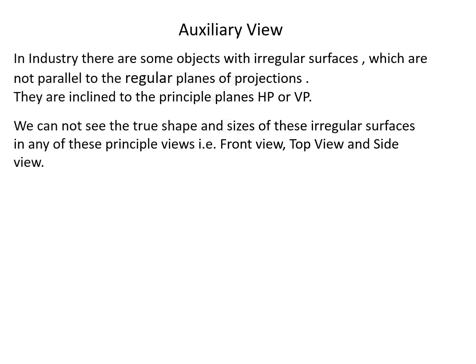Let us see what is meant by an auxiliary view. In industry, there are some objects which are of irregular surfaces — that is, which are not parallel to the regular planes of projection. It means that they are inclined to the principal planes, that is HP or VP. We cannot see the true shape and size of these irregular surfaces in any of the principal views: front view, top view, and side view.